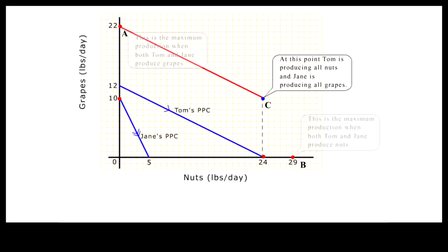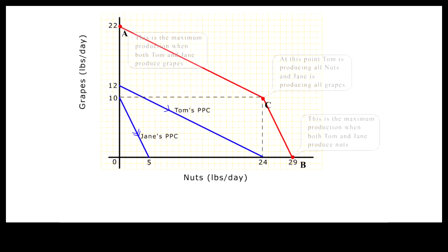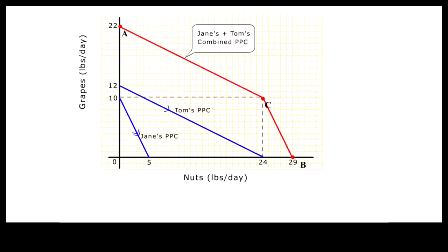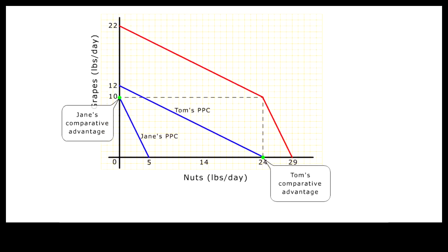If we want to produce even more nuts, then Jane — the higher cost nut producer — should start producing nuts. The combined production function shows that the relative slope is getting steeper beyond point C, because we are moving from the lower cost to the higher cost nut producer. All points along the combined PPC represent the combined output of Tom and Jane with at least one of them specializing according to their comparative advantage.